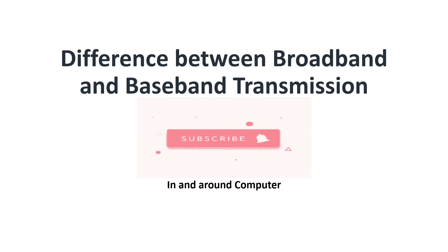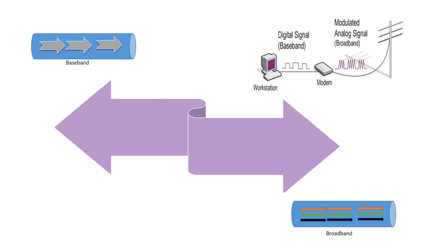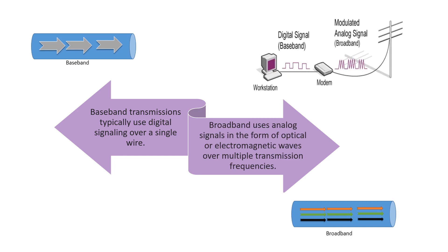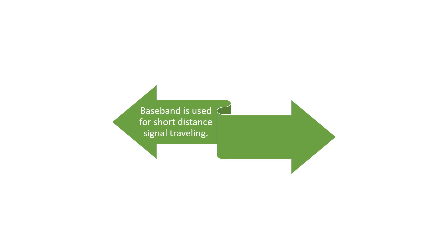In this video, we are going to see the difference between broadband and baseband transmission. Baseband transmissions typically use digital signaling over a single wire, while broadband uses analog signals in the form of optical or electromagnetic waves over multiple transmission frequencies. Baseband is used for short distance signal traveling, and broadband is used for signal traveling over longer distances.